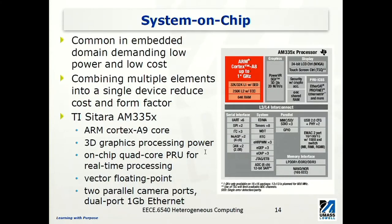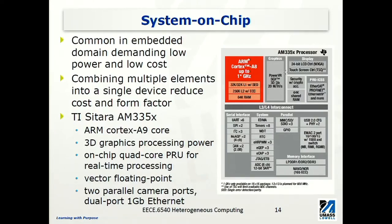Another design option is system-on-chip. System-on-chip is very common in the embedded domain, where we want very low power consumption and low cost. It combines multiple elements into a single device on the same chip to reduce cost and form factor. In this example, this is a chip from TI. It has an ARM Cortex-A8 core running up to 1 GHz, with some amount of level 1, level 2 cache, and on-chip memory. In addition to this computing core, it has a lot of different dedicated functional units.